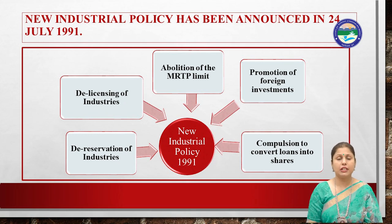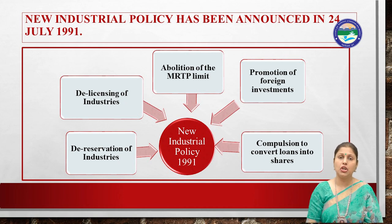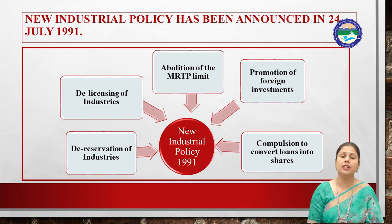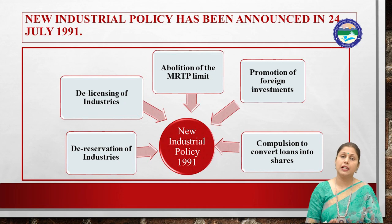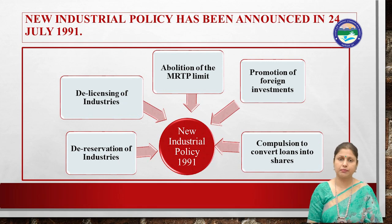There were many industries that were reserved for the public sector. So these industries were opened up and private entrepreneurs were also allowed in these industries. The licensing system, which was called License Raj, was also a major part of this policy.